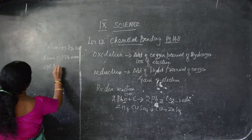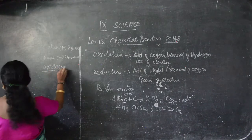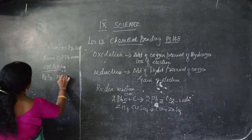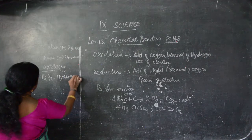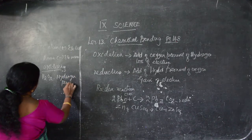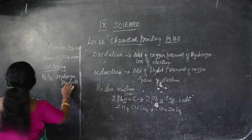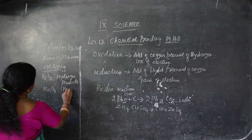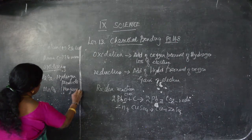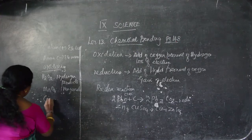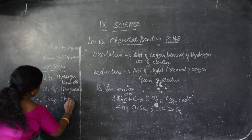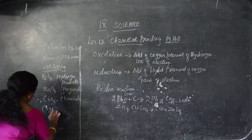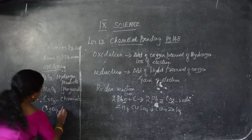Let me write these again. Oxidizing agents: H₂O₂ — hydrogen peroxide; MnO₄ — manganate; CrO₃ — chromate; Cr₂O₇ — dichromate.